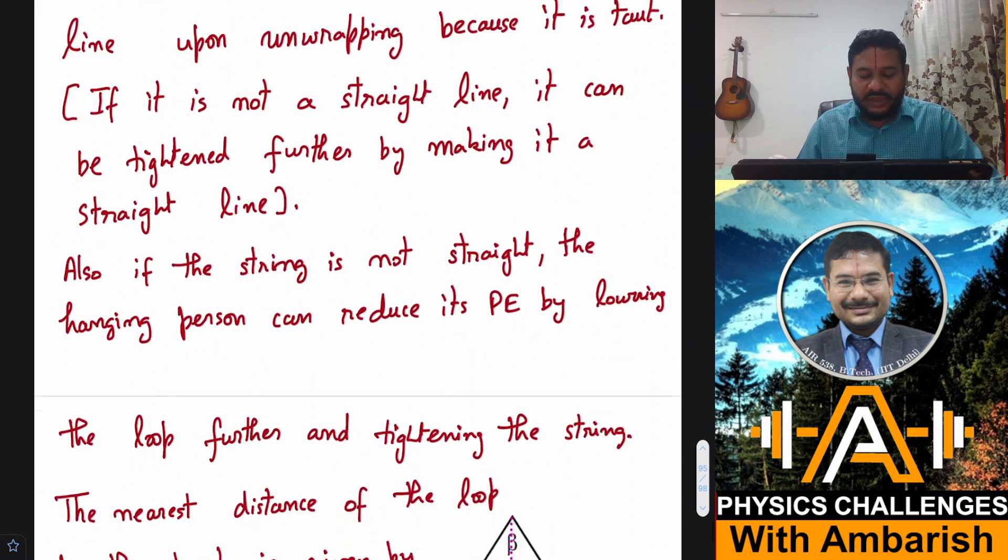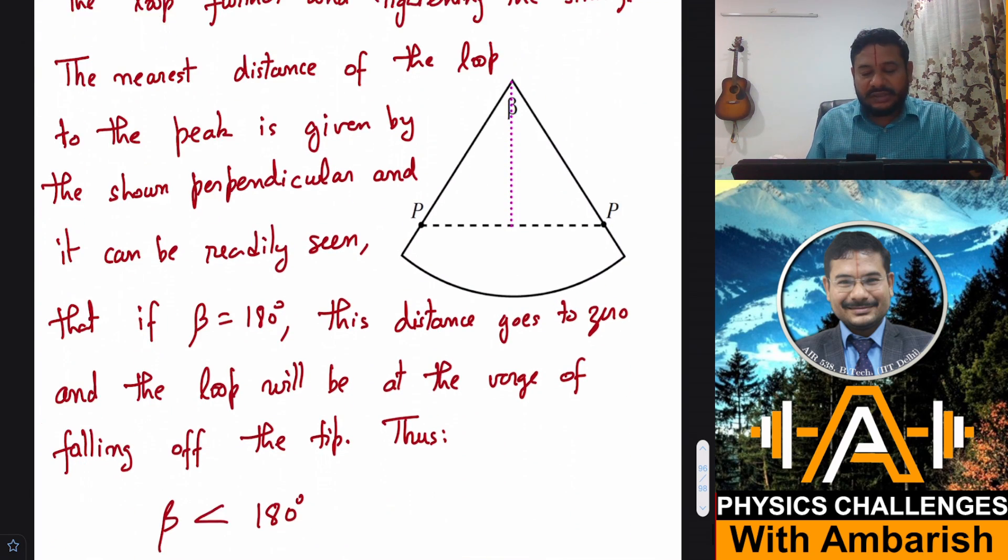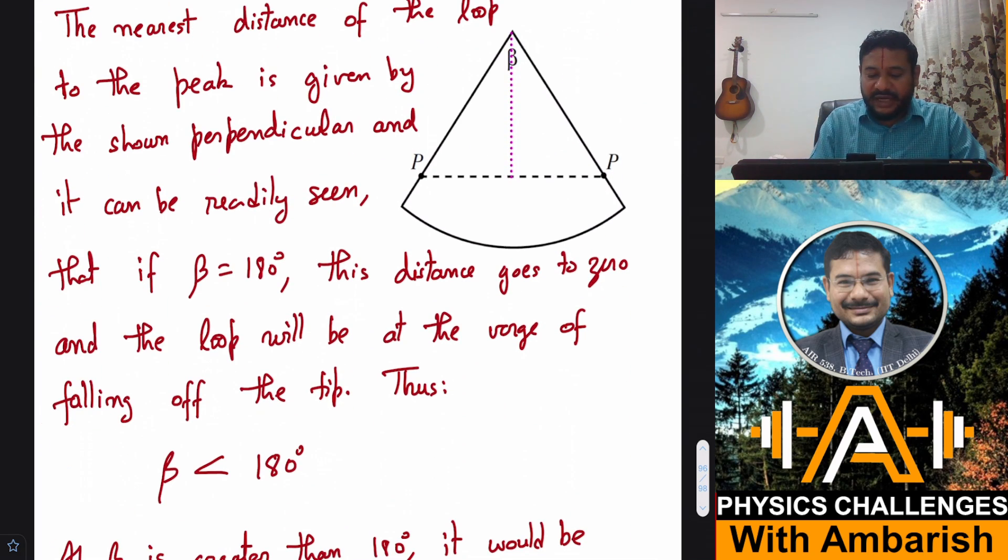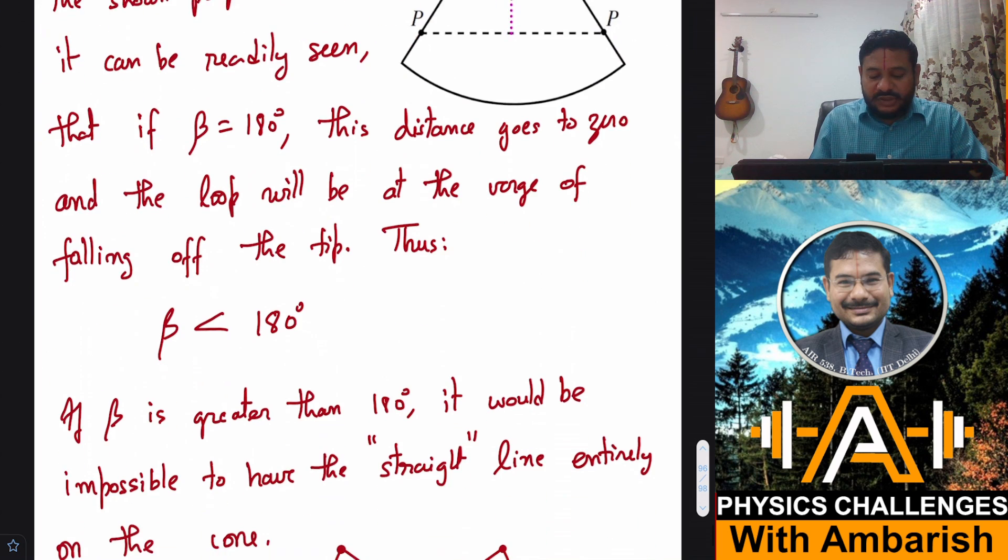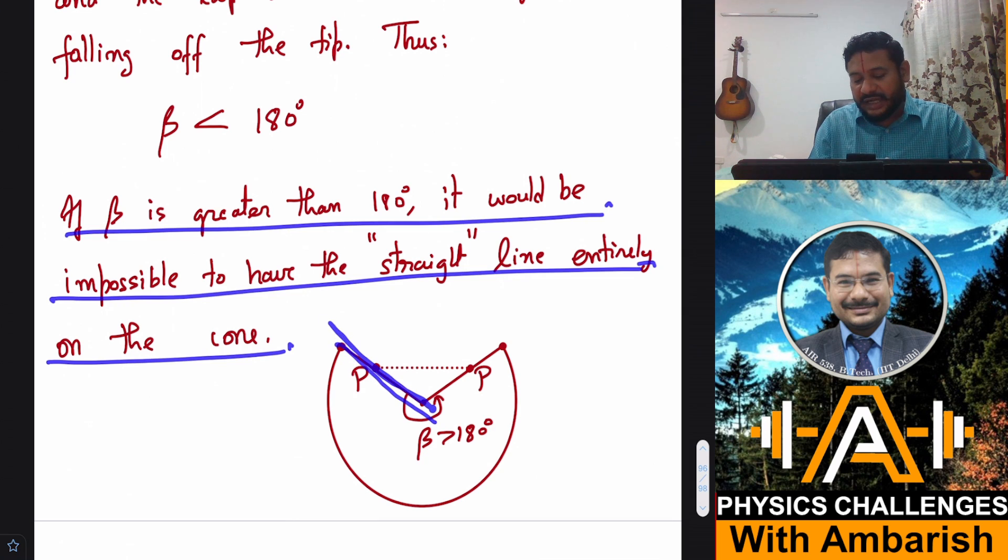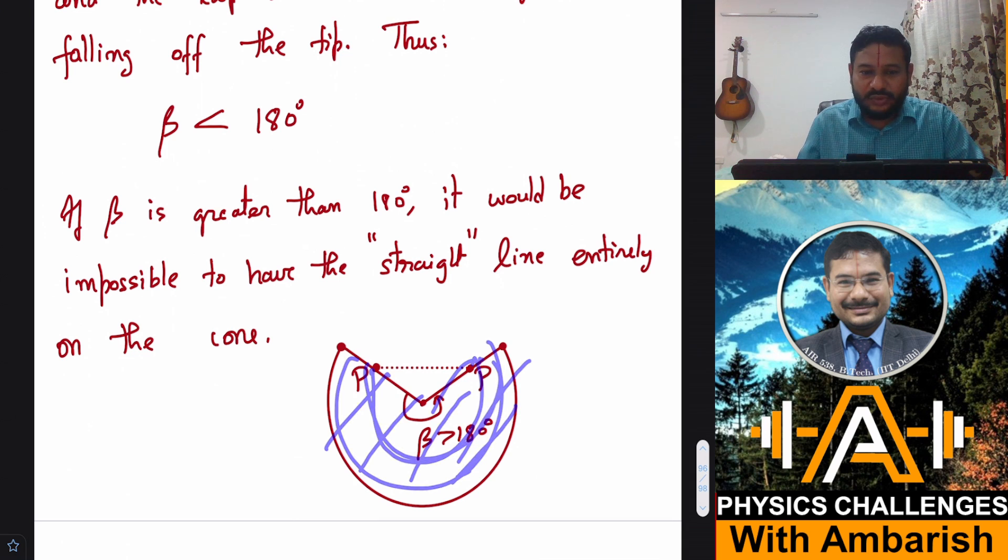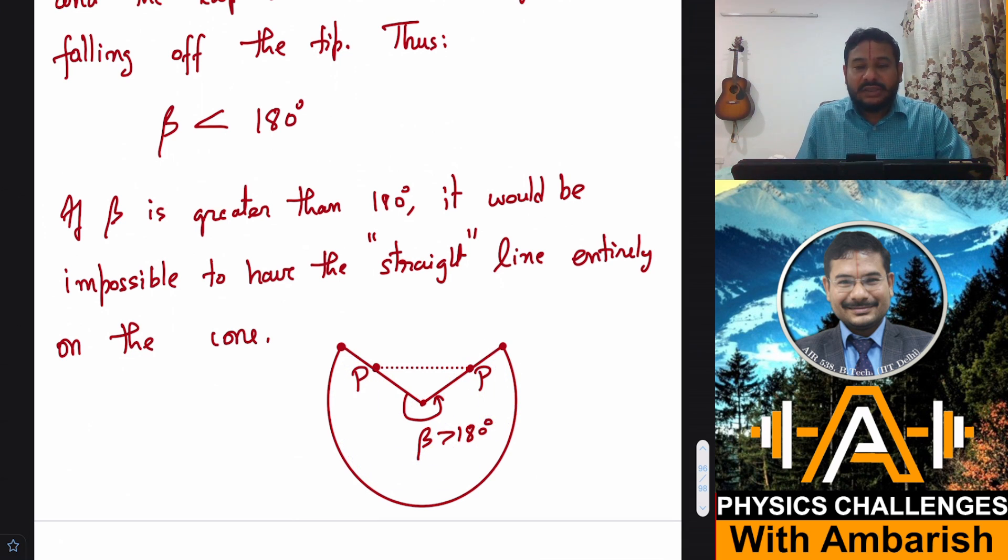So beta cannot be more than 180 degrees. And you can also see that because the string, the loop, the string has to be tight. So if beta is greater than 180 degrees, what would happen? It would be impossible to have straight line entirely on the cone because the cut line is this and P lies on the cut and straight line distance is this. So this is obviously not lying on the cone. The curves that lie on the cone have to be this way because this is the paper that's making the cone, I mean, upon the cut.